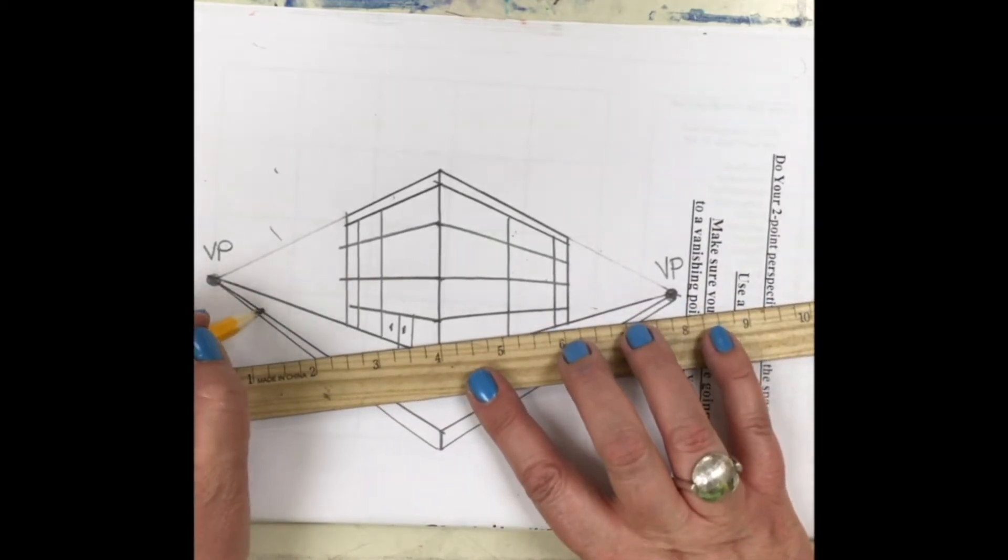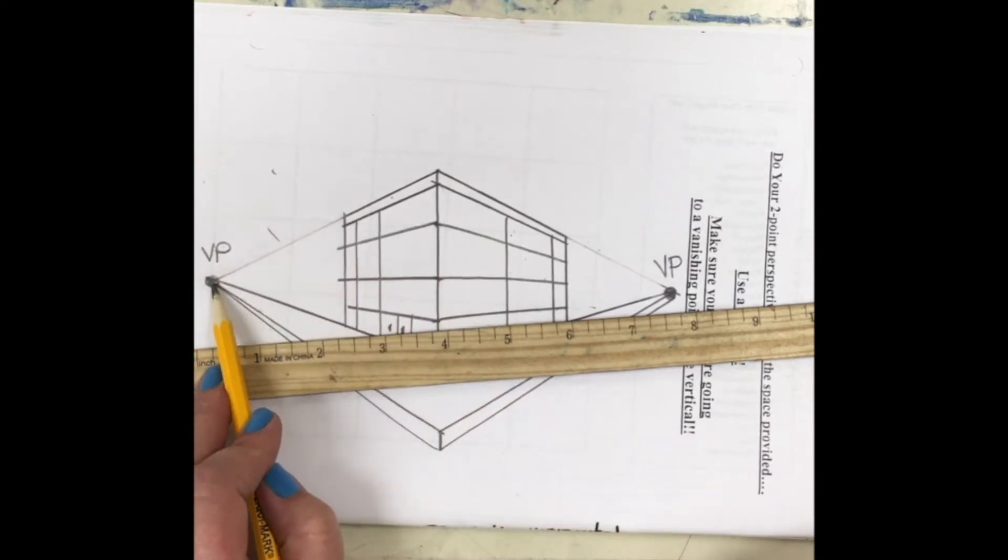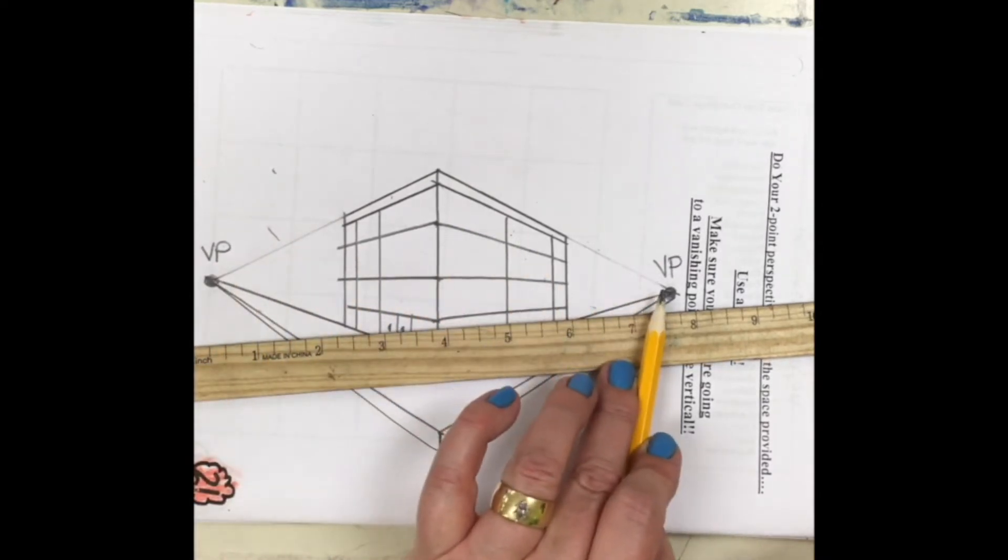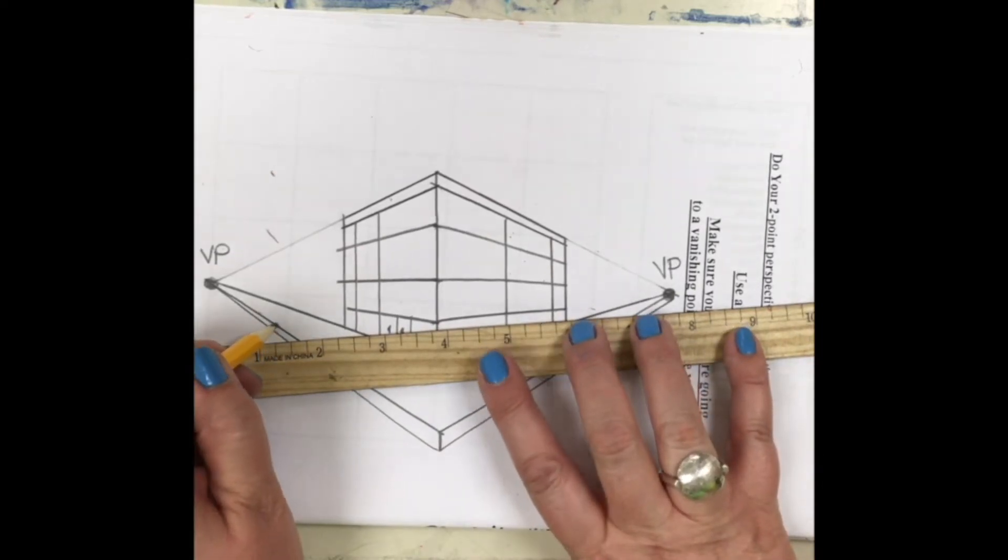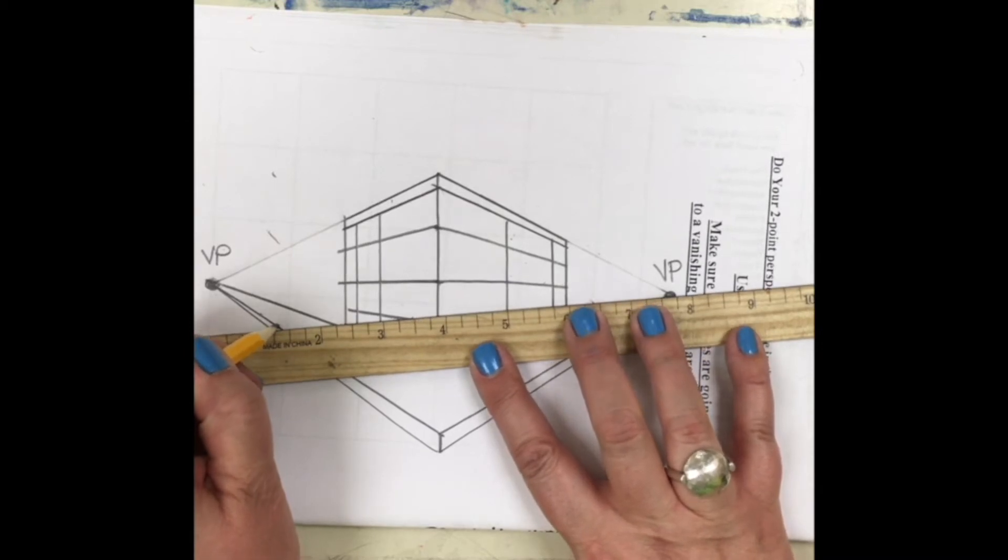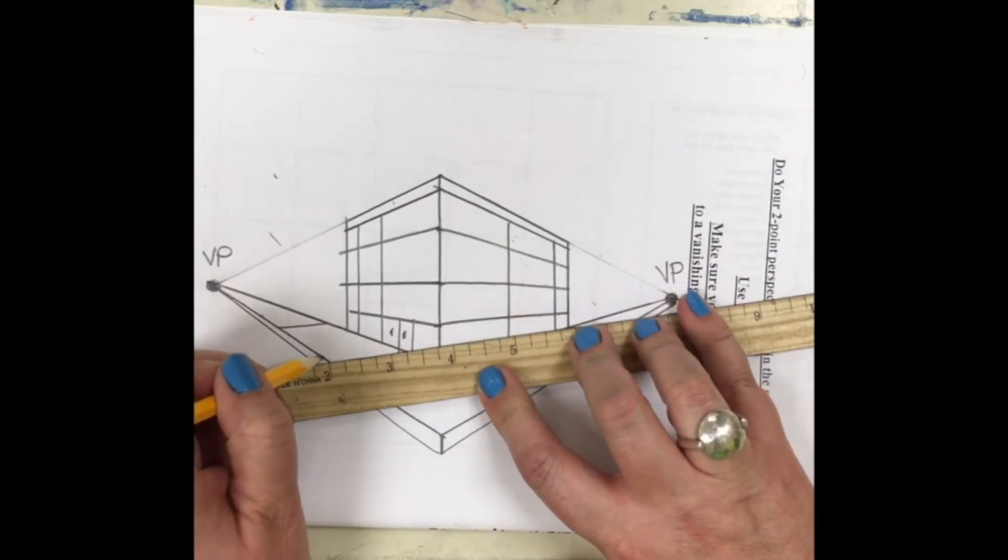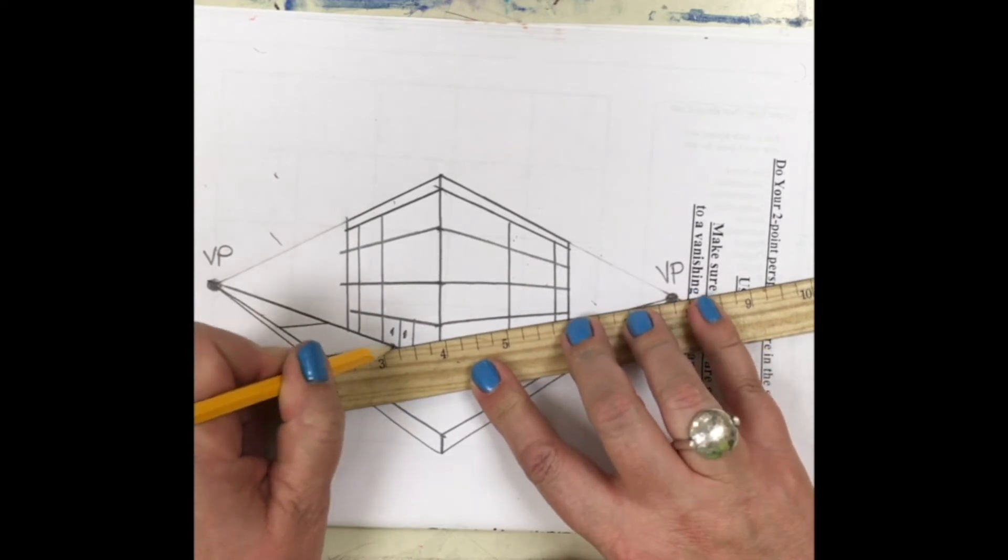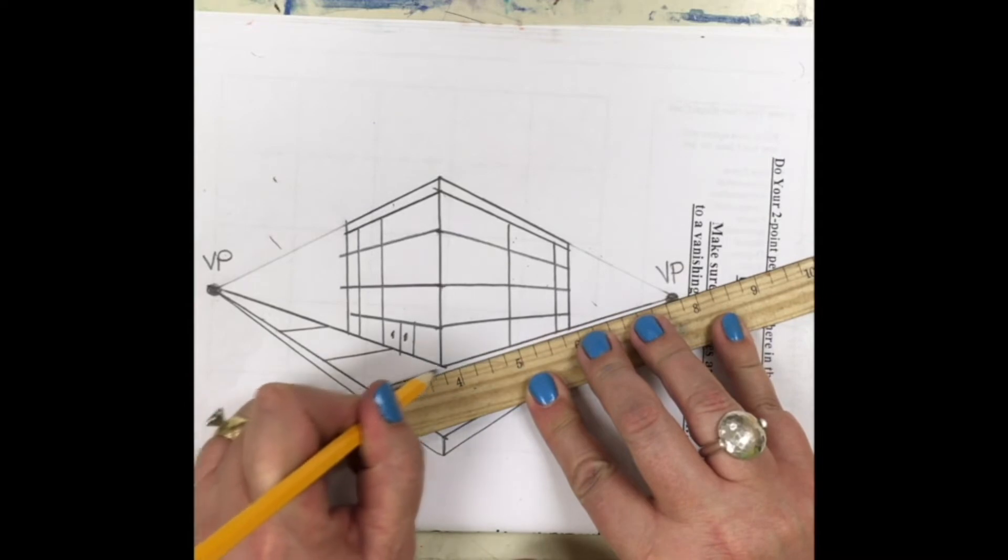So this is going to be different. Everything so far on the left has gone to the left vanishing point, on the right it's gone to the right. Now I'm going to reverse that so that my sidewalk looks flat. So my left-hand side sidewalk goes to my right-hand side vanishing point. Left to the right, left to the right.